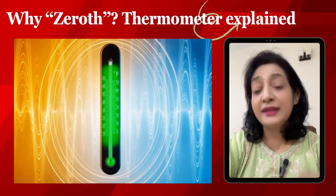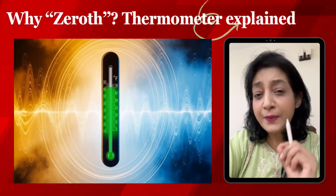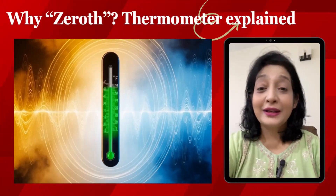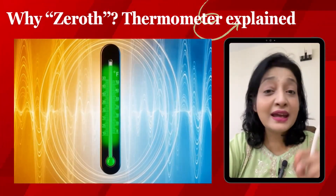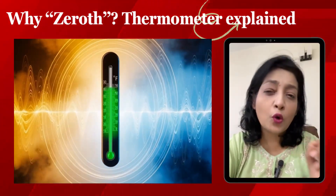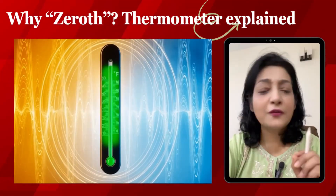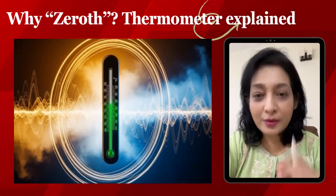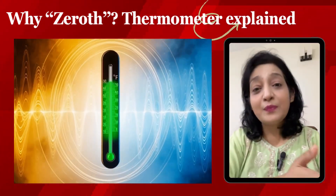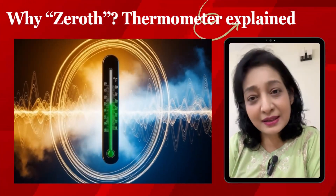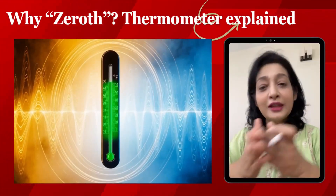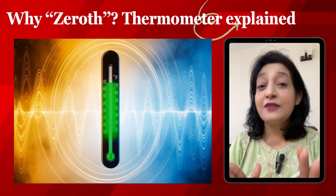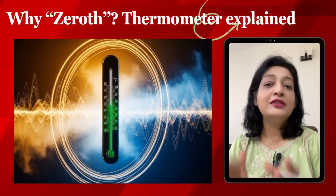Why 'zeroth'? There is a more fundamental principle that both the first and second laws assumed but never stated. This missing principle was: if system A is in thermal equilibrium with system B, and system B is in thermal equilibrium with system C, then system A is also in thermal equilibrium with system C. This seems simple, but it is the foundation of temperature measurement and thermometry.